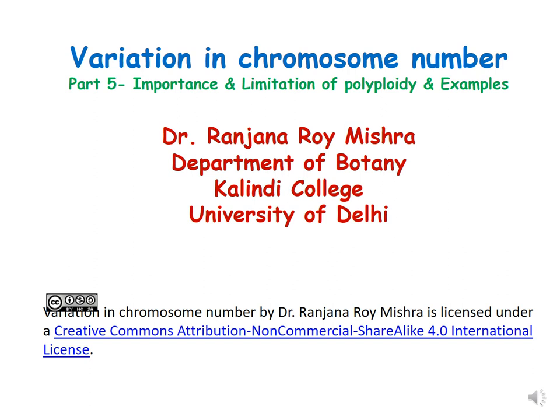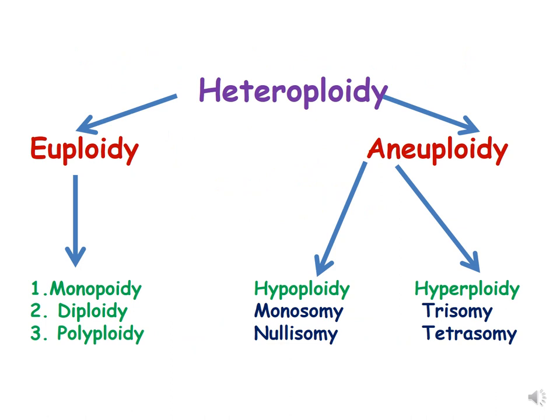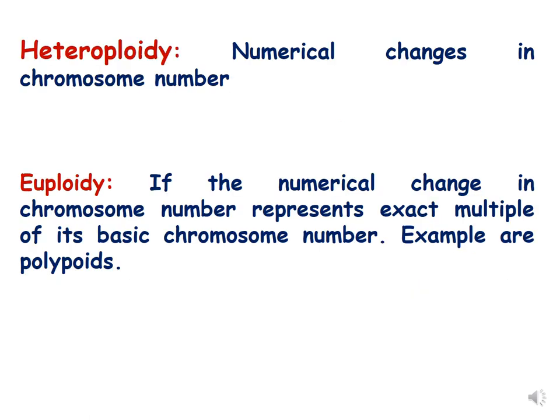Hello dear students. This is part 5 of the lecture on variation in chromosome number, also called heteroploidy. In this lecture we will be discussing more examples of polyploidy and the importance and limitations of polyploidy. In the previous four lectures we have already discussed heteroploidy, euploidy, and aneuploidy, so we are not going to repeat those definitions here.